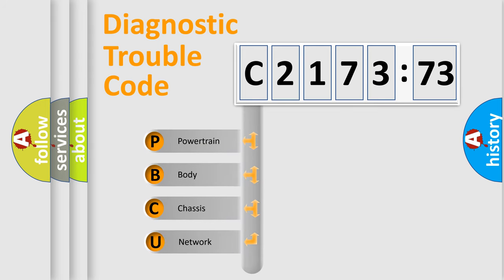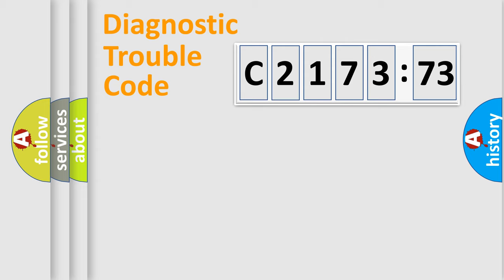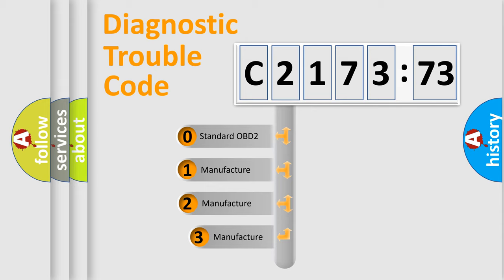First, let's look at the history of diagnostic fault code composition according to the OBD2 protocol, which is unified for all automakers since 2000. We divide the electric system of the automobile into four basic units: Powertrain, Body, Chassis, and Network.